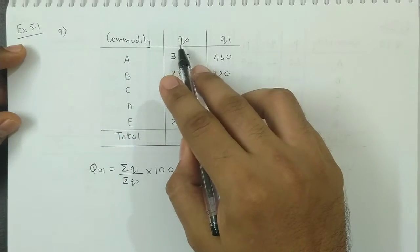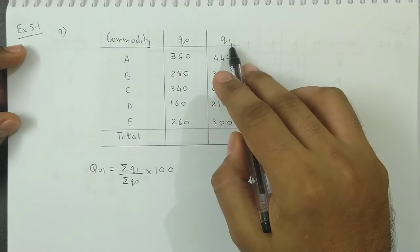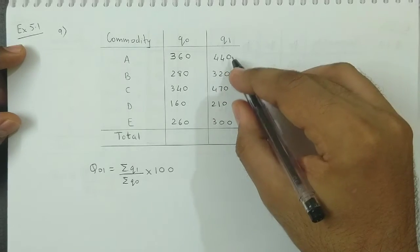Then base year quantities Q0. These are Q0 values. Next is current year quantities Q1. These are Q1 values.